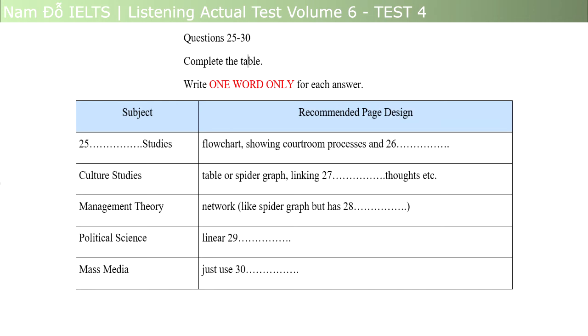But what about management theory? How would you approach that? The same as with culture studies. I'd use a network, which is basically the same as a spider graph, linking thoughts, although this time there are directions involved. It is this element that makes it different, the fact that the thoughts go one way and not the other. OK. Has directions. It sounds logical. What about the other subjects, such as political science? There's no predictable order to that. Well, for that I'd just put my notes in a line, that is, in linear or straight line fashion, and these notes would use symbols, of course, to save time.